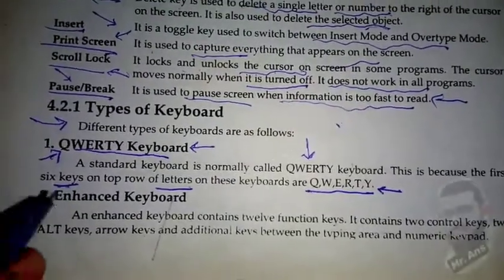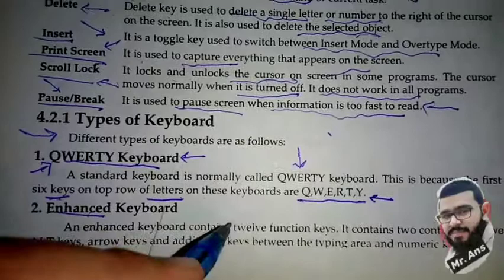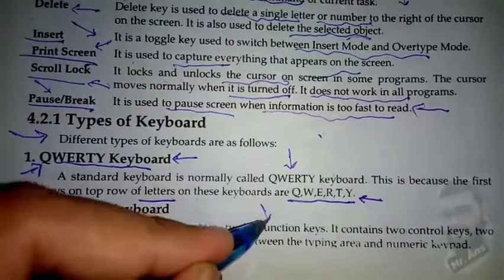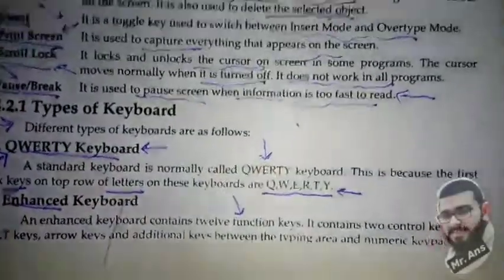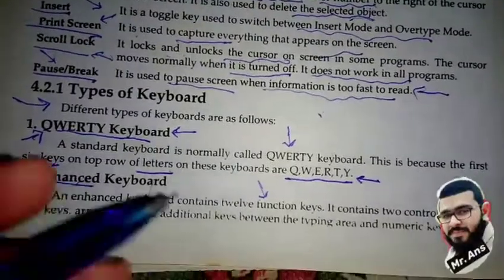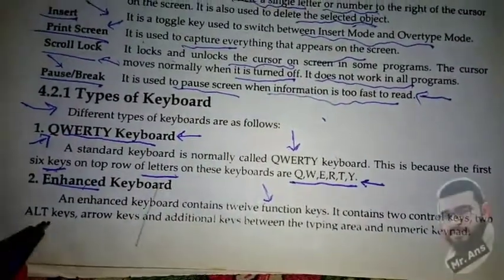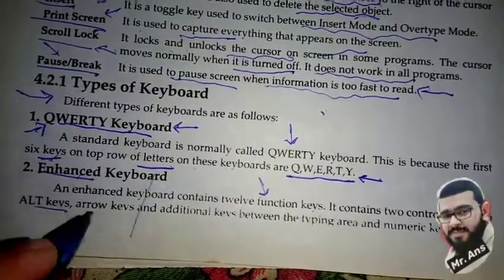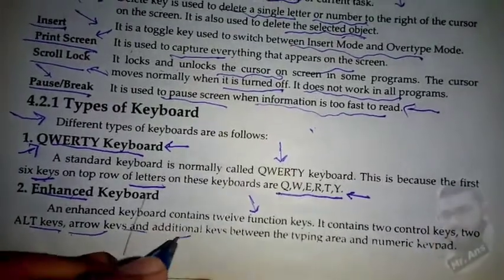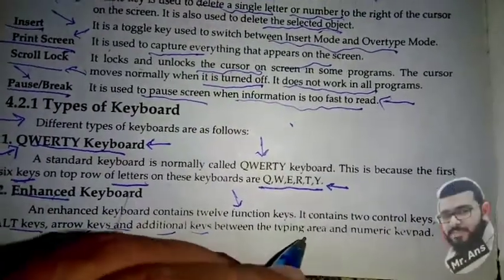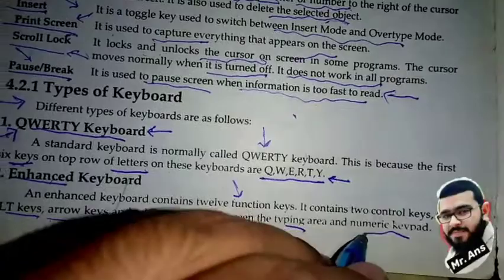Next, we have the enhanced keyboard. An enhanced keyboard contains 12 function keys - F1, F2, and so on. It contains two control keys, two alt keys, arrow keys, and additional keys between the typing area and numeric keyboard.